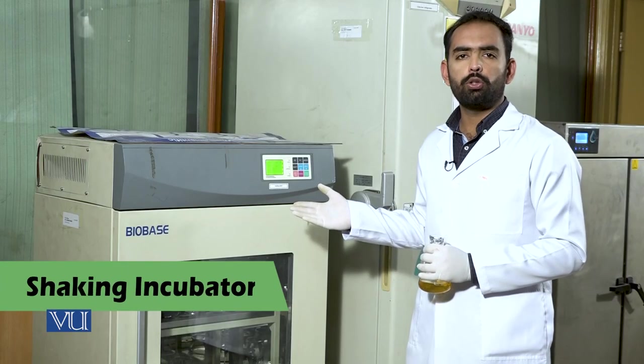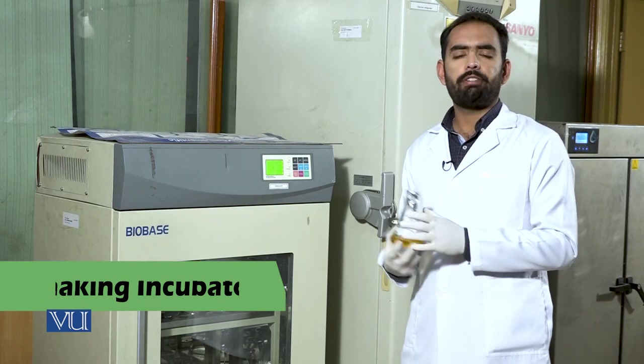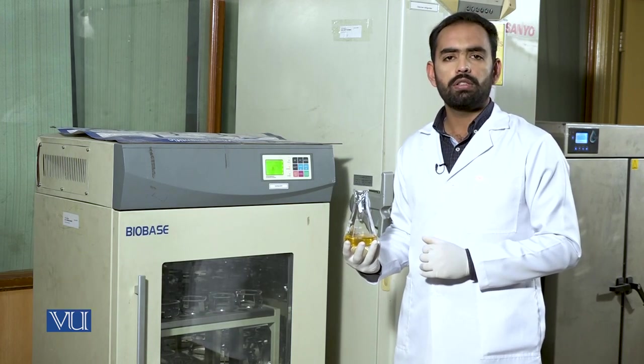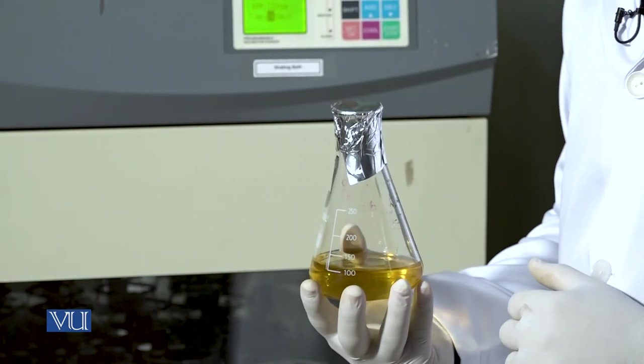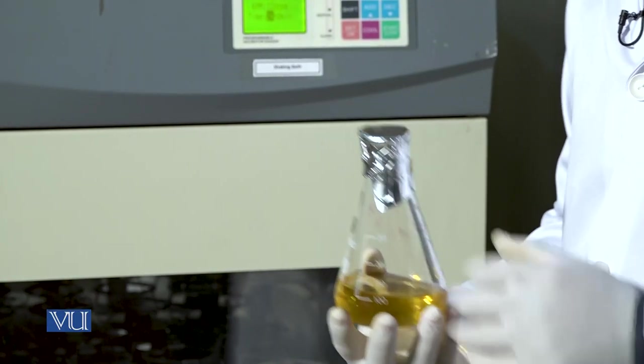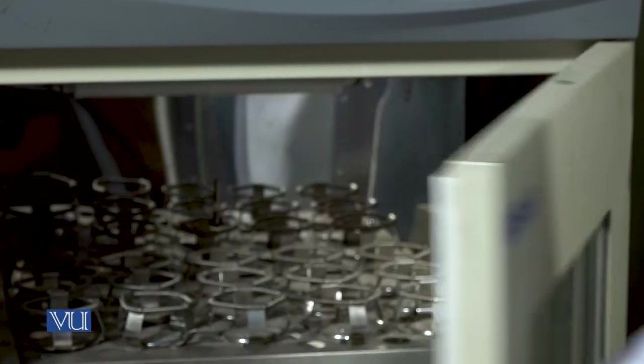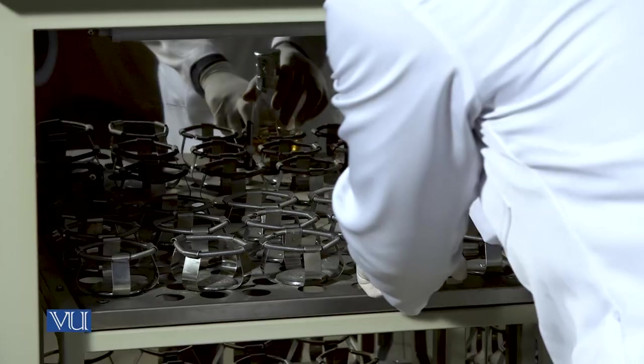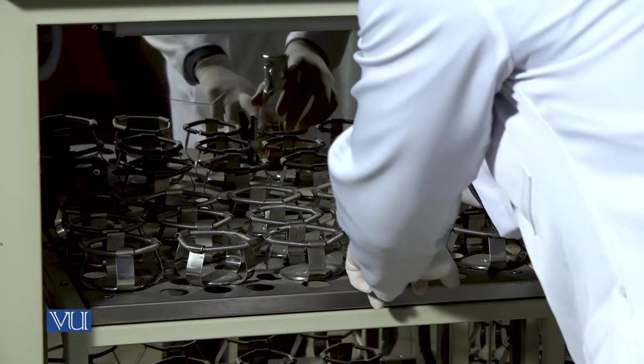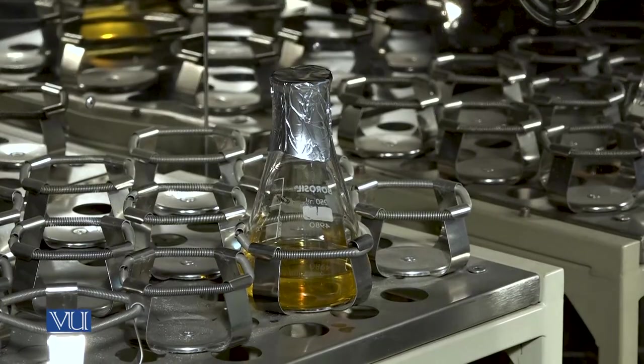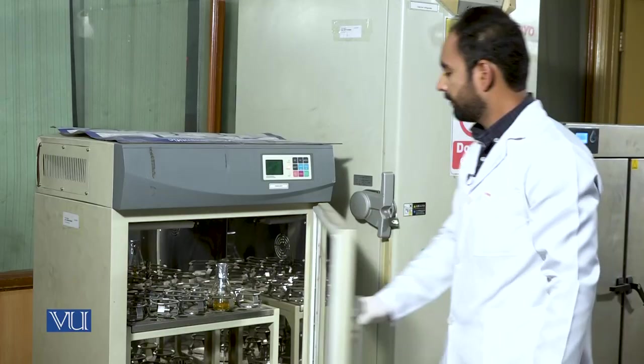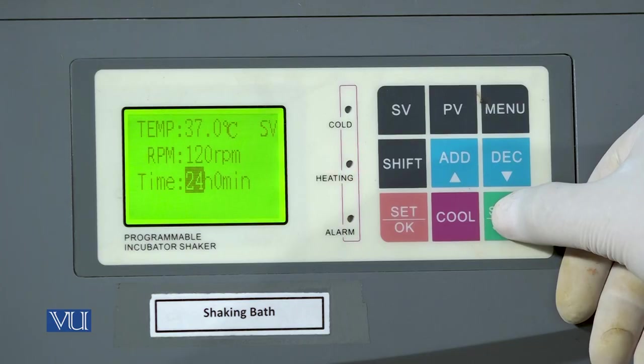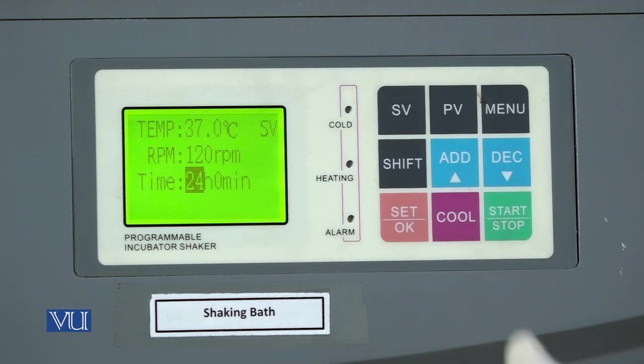This is a shaking incubator. We will place the flask into the shaking incubator for overnight growth at 37 degrees Celsius for 24 hours. Press the start button to allow it to shake.